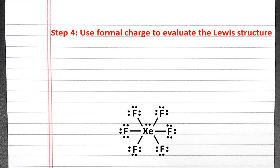The fourth step is to use formal charge to evaluate the Lewis structure. The formal charge for an atom is equal to the number of valence electrons in a neutral atom of that element, subtract the number of bonds plus the number of lone pair electrons.